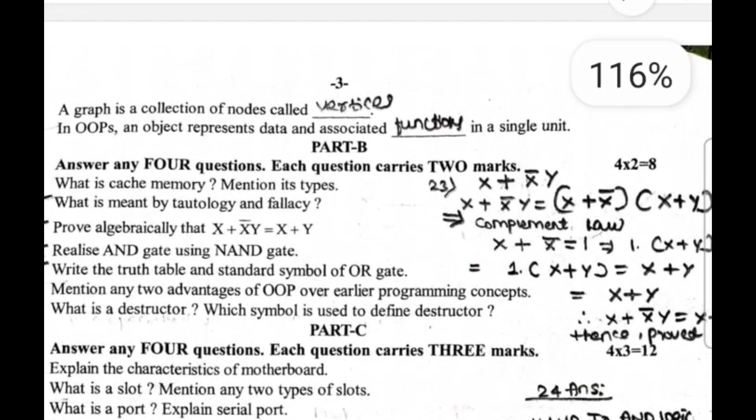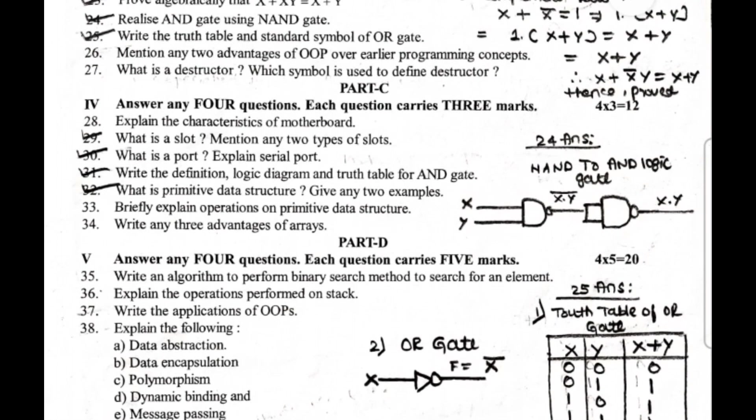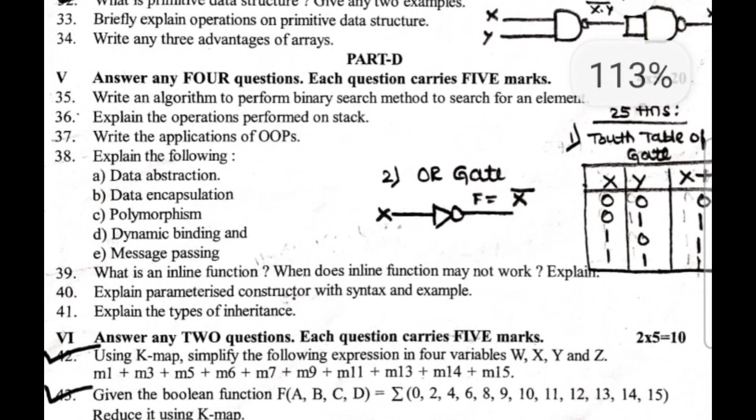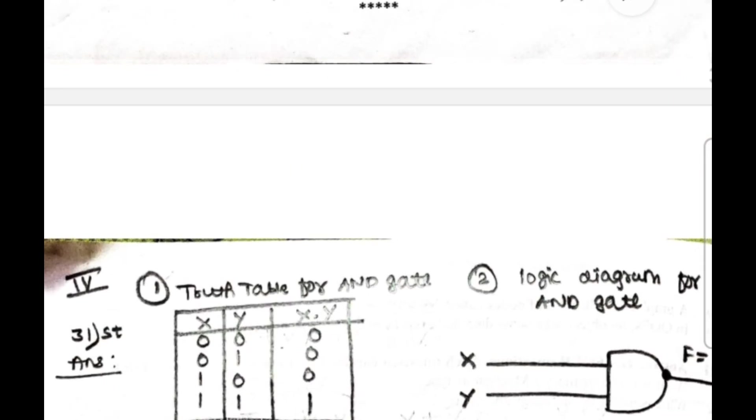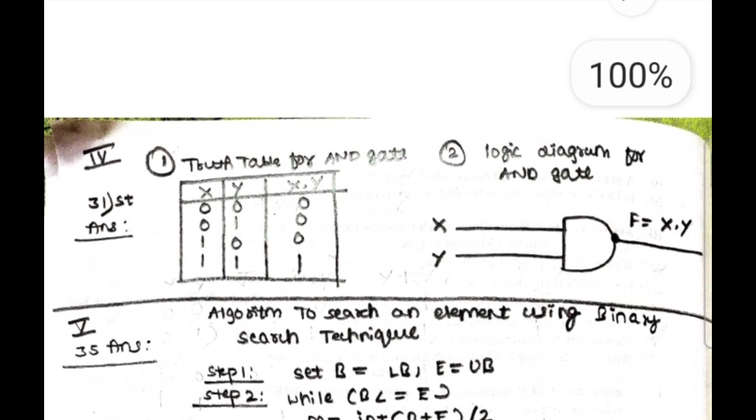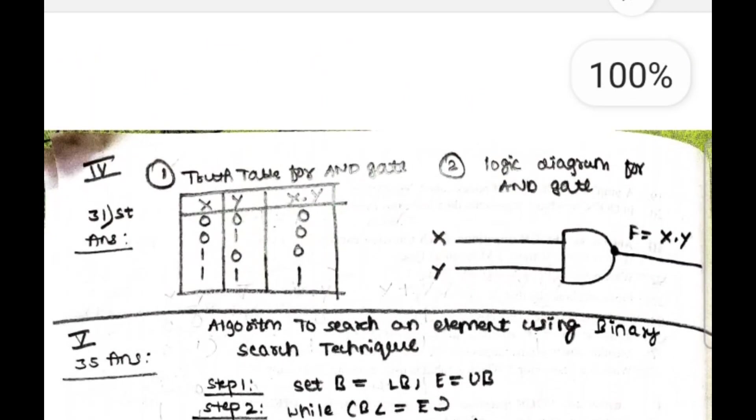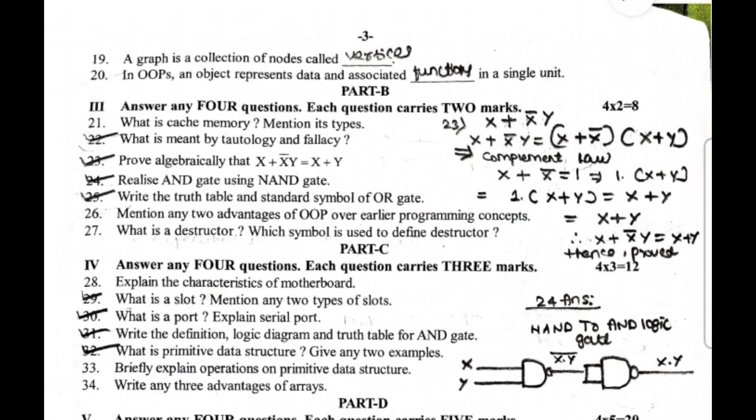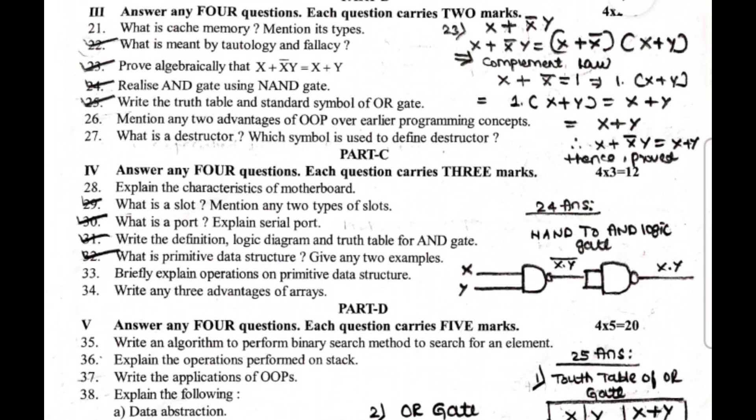Next one: what is primitive data structure, give any two examples? These questions were very easy guys, I hope you all have done these questions. Part D: answer any four questions, each question carries five marks. Write an algorithm to perform binary search method to search for an element. This is the algorithm. 35th question: algorithm to search an element using binary search technique. Next, explain the operations performed on stack. Write the applications of OOPs. Explain data abstraction, data encapsulation, polymorphism, dynamic binding and message passing.